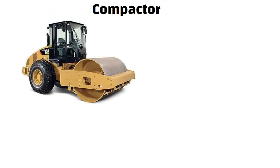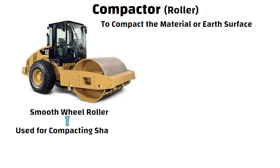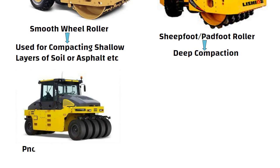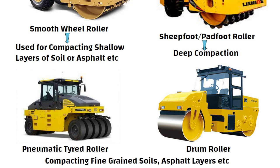Compactors, also known as rollers, are used to compact the material or earth surface. Smooth wheel rollers are used for compacting shallow layers of soil or asphalt. Sheep foot rollers, also known as pad foot rollers, are used for deep compaction purposes. Pneumatic tired rollers and drum rollers are used for compacting fine grained soil, asphalt layers, etc.